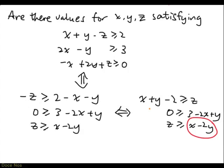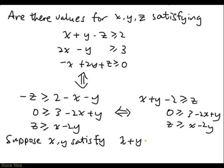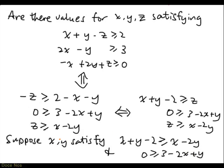Let's look at it from a different angle. Suppose I could find values for x and y satisfying x plus y minus 2 greater than or equal to x minus 2y, and 0 greater than or equal to 3 minus 2x plus y. Then, because x plus y minus 2 is at least x minus 2y, I can find a z value that sits between them, so that the first and third inequalities are also satisfied.